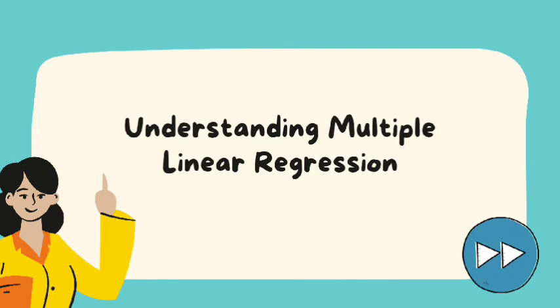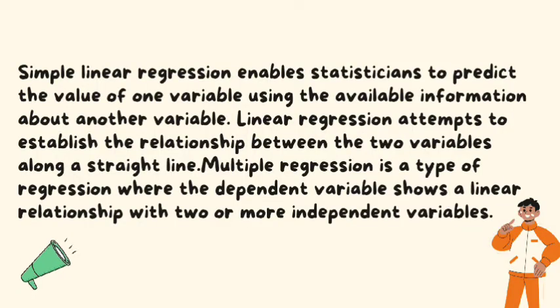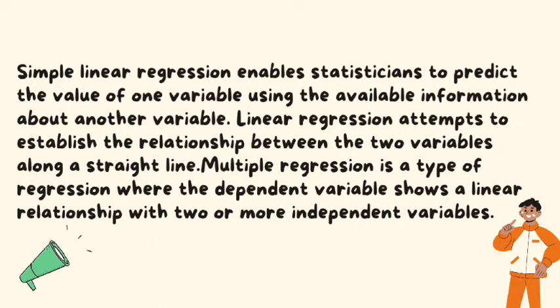Next is understanding multiple linear regression. Simple linear regression enables statisticians to predict the value of one variable using the available information about another variable. Linear regression attempts to establish the relationship between the two variables along a straight line.